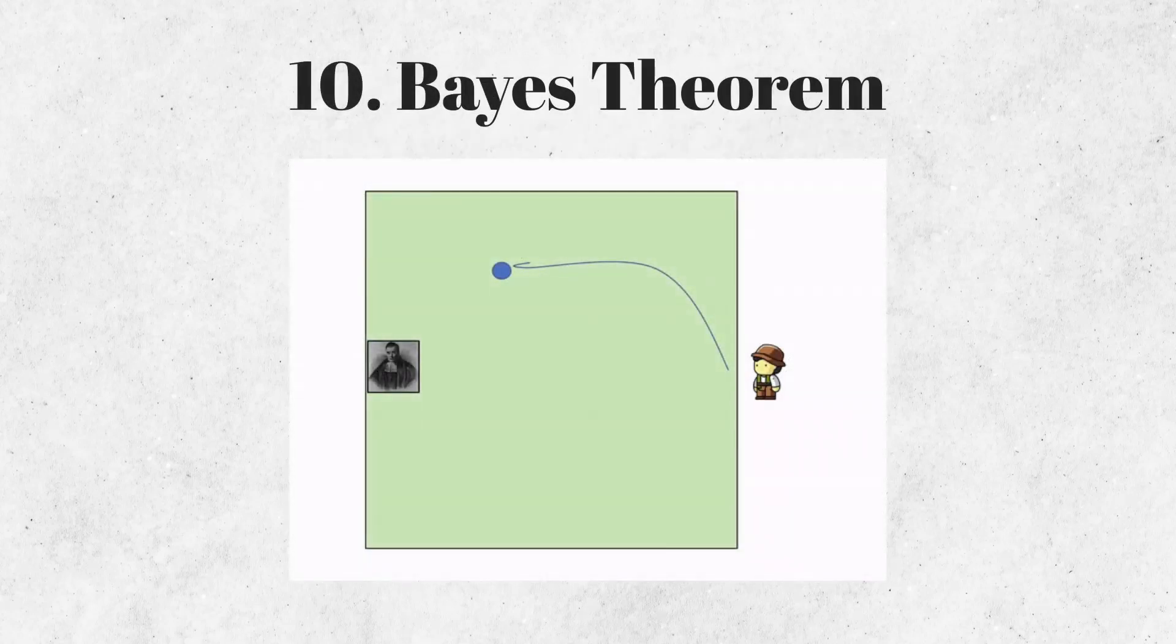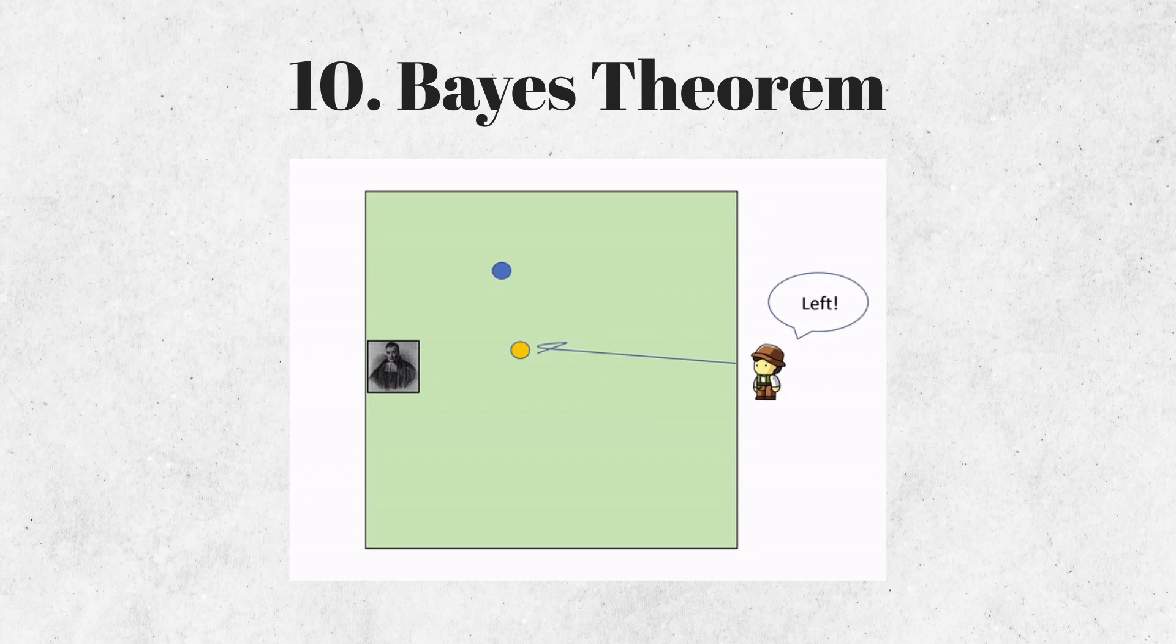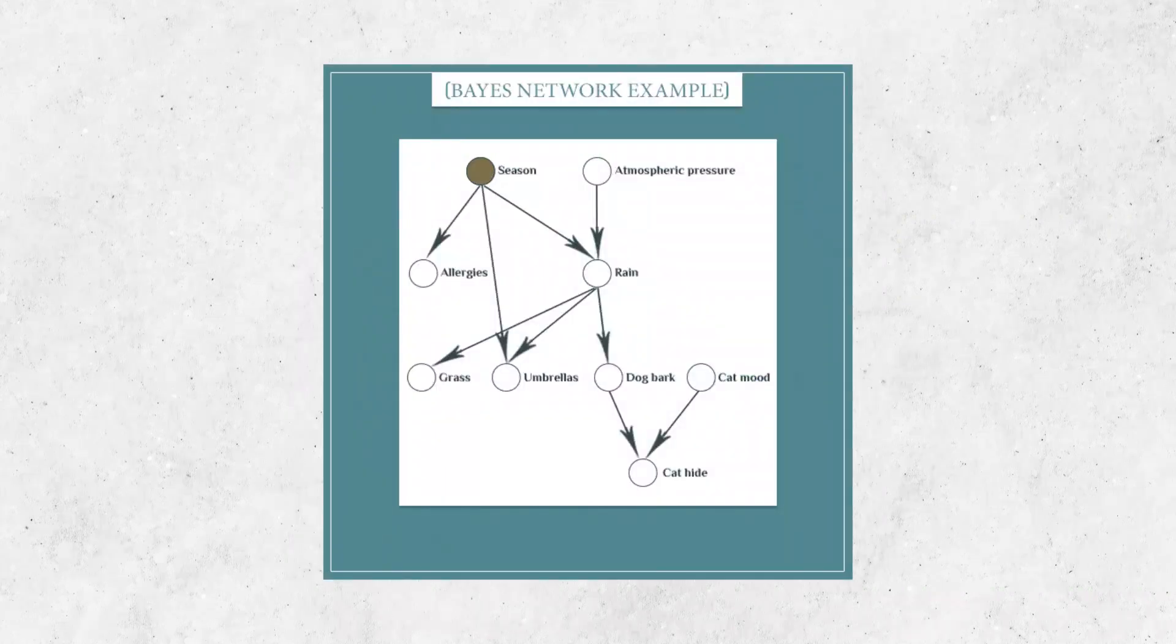Finally, we have Bayes' Theorem, which is used in probability and statistics for updating beliefs based on new evidence. It provides a method for calculating the probability of an event based on prior knowledge and new information.